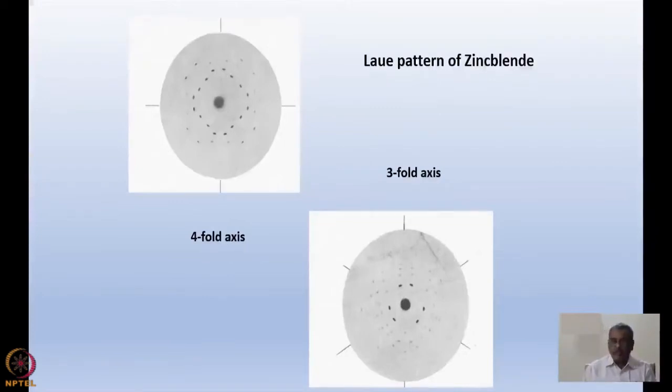The diffraction spots could be seen. And very quickly, they improved the experimental setup and took Laue pattern of zinc blend, which is ZnS. You can clearly see it was a single crystal with the four-fold symmetry over here and the three-fold symmetry over here.